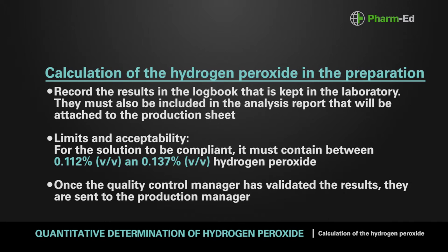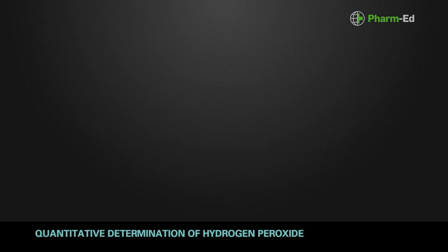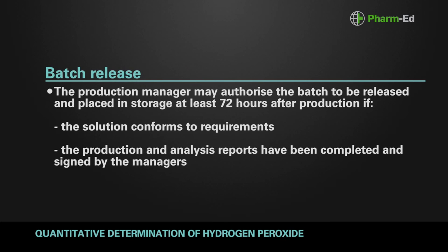For the solution to be compliant, it must adhere to the hydrogen peroxide values shown on the screen. Once the quality control manager has validated the results, they are sent to the production manager. The production manager may authorize the batch to be released and placed in storage at least 72 hours after production, if the solution meets the requirements and the production and analysis reports have been completed and signed by the managers.